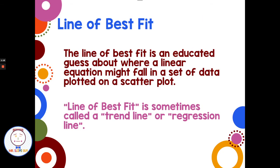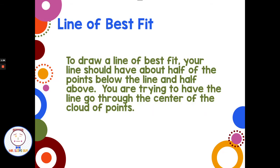Now, a line of best fit is an educated guess about where a linear equation might fall in a set of data plotted on a scatter plot. It's sometimes called a trend line or a regression line. To draw our line of best fit, your line should have about half the points above it and about half the points below it, going through the center of the cloud of points.